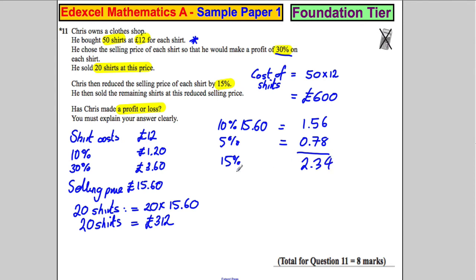And then what you're going to do is you're going to take that off. So the 15% discount price would be equal to the £15.60 take away £2.34, which would leave you with £13.26.